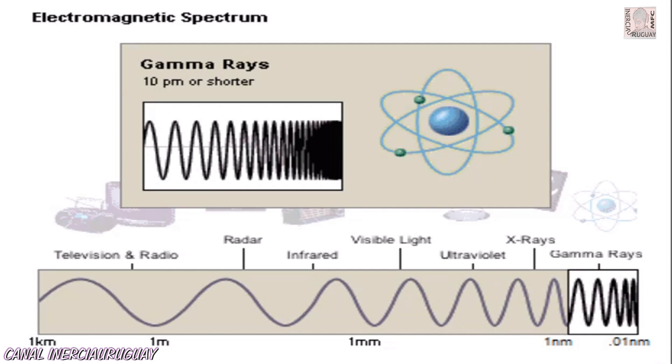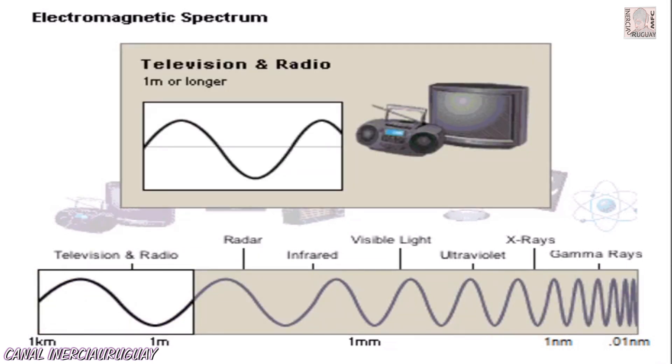Gamma rays have an extremely high frequency and short wavelength. Radio waves have a much lower frequency and much longer wavelength.